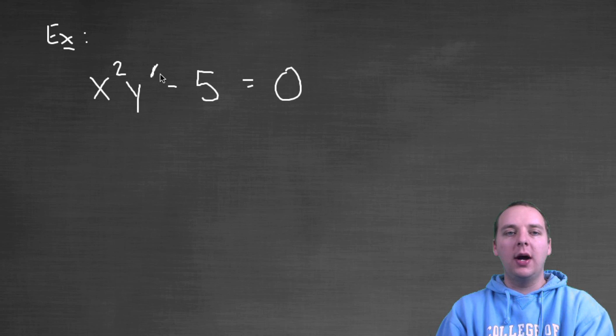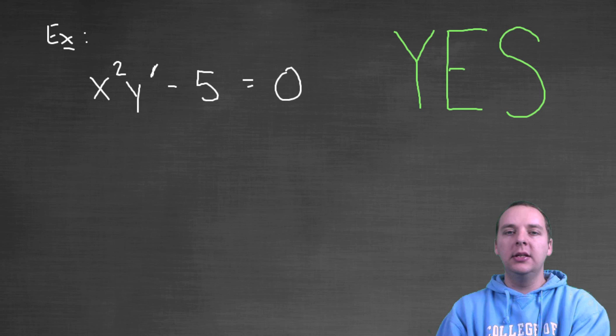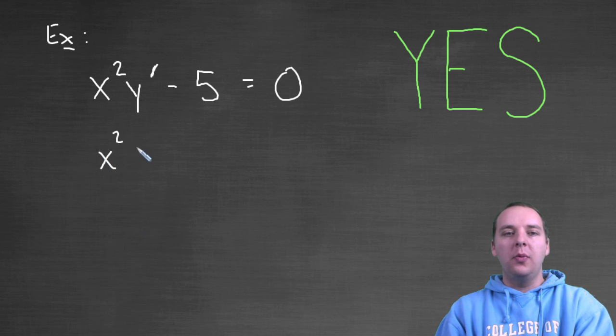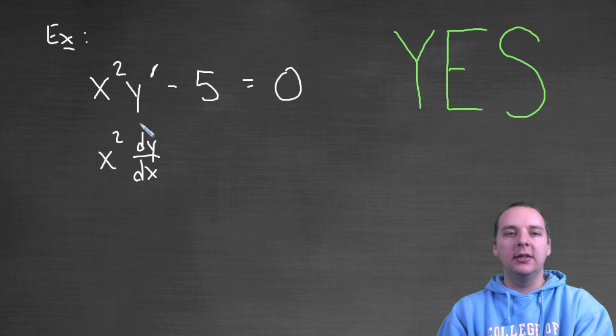How about this guy: x squared y prime minus 5 equals 0? This one's a little tricky. Turns out this one is yes as well, this is separable. How do we see that? Well, let's write this as x squared dy/dx - we'll write y prime as dy/dx. Let's move the 5 to the right hand side. Let's divide both sides by x squared until we have dy/dx equals 5 over x squared.